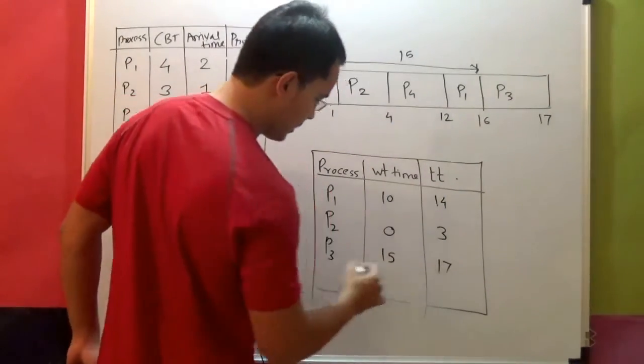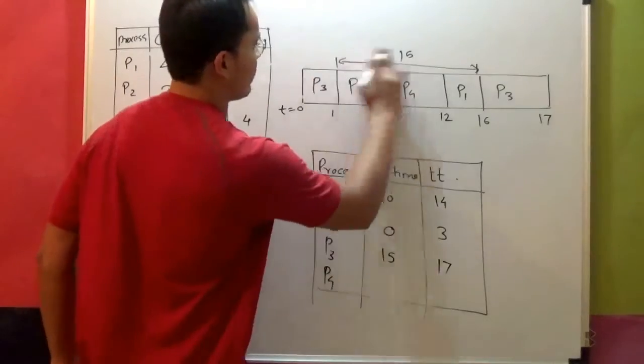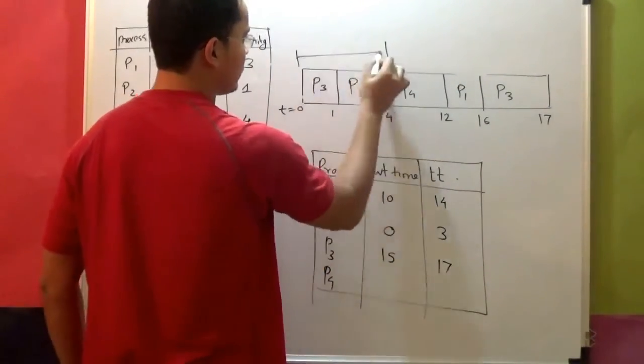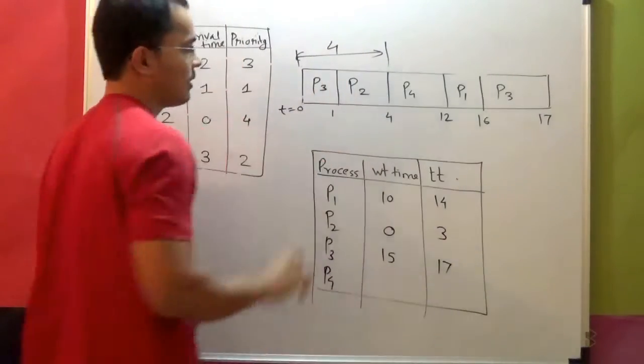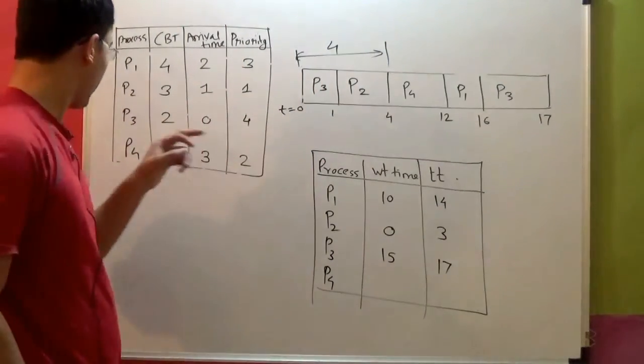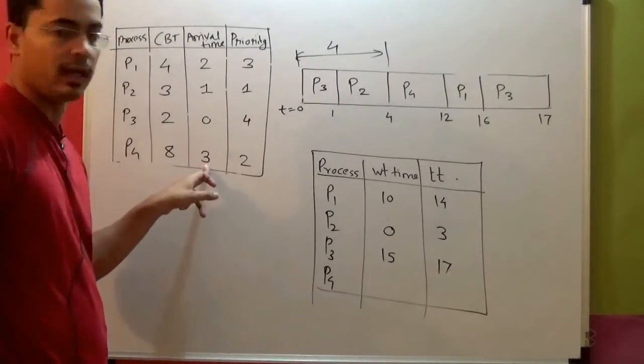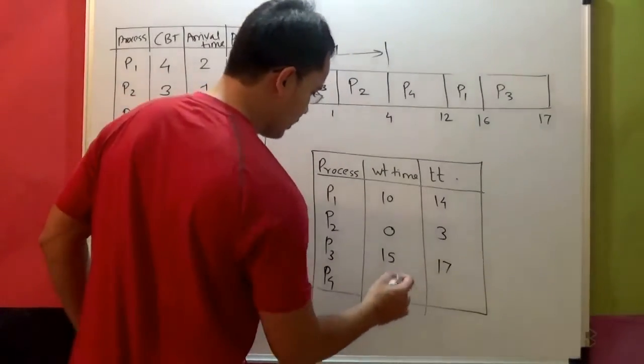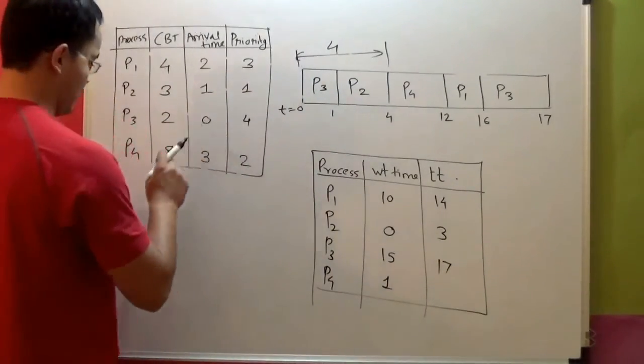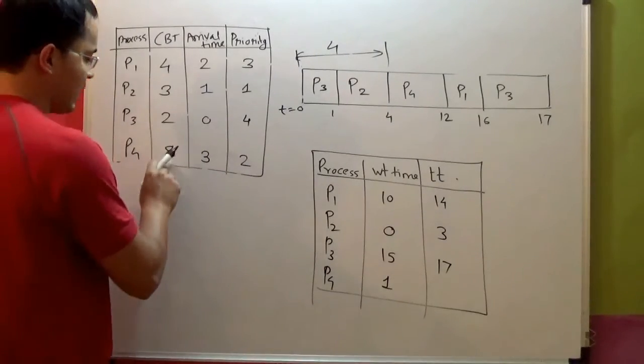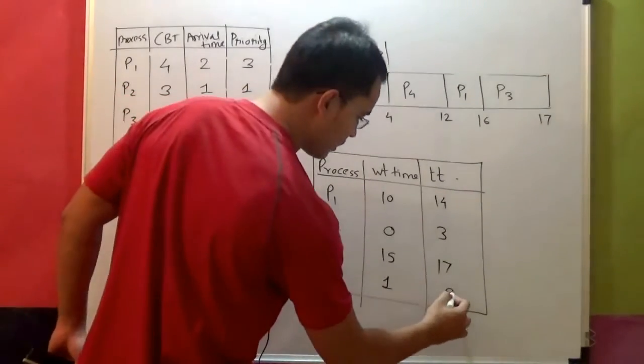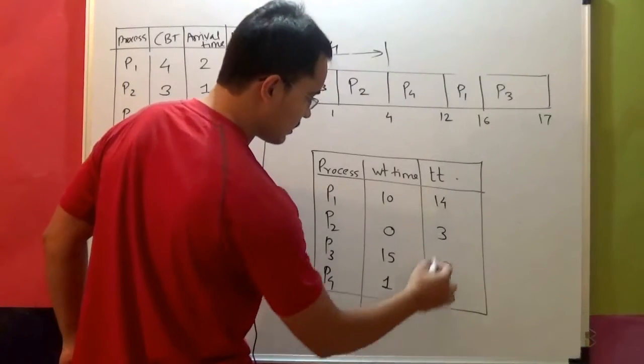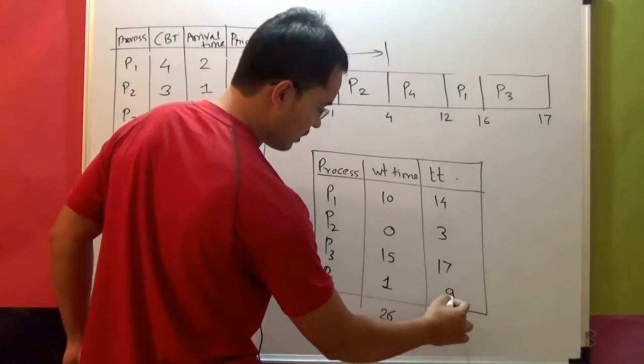What about P4? What is the waiting time of P4? Waiting time of P4 is 4. At what time did it arrive? It arrived at time equal to 3. So 4 minus 3, that is 1. Waiting time is 1. Burst time, 1 plus 8, that is turnaround time. Burst time is 8, 8 plus 1 is 9, is the turnaround time. So this is 26 and this is 43.